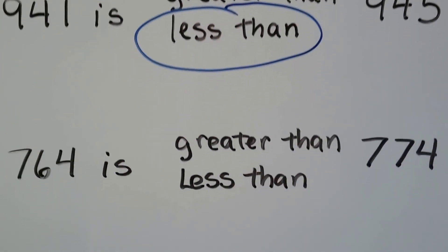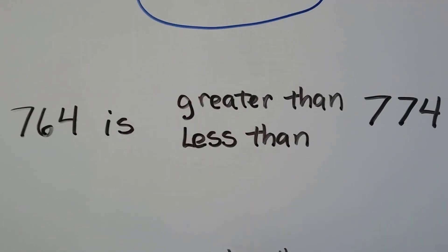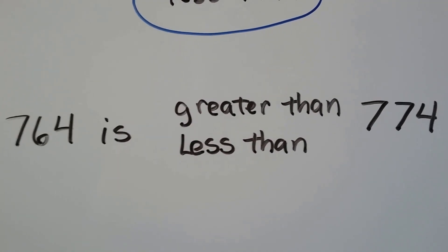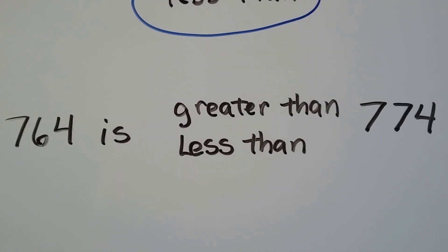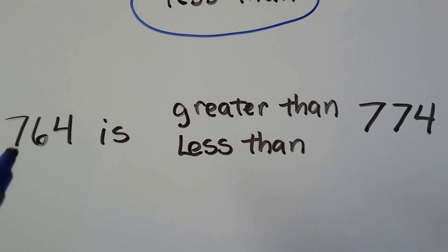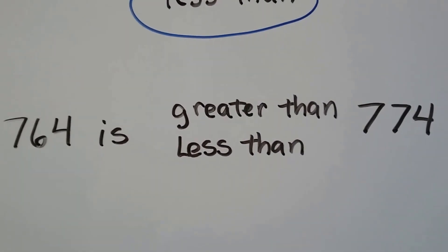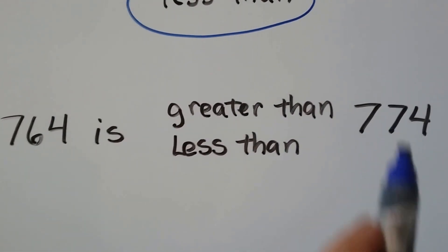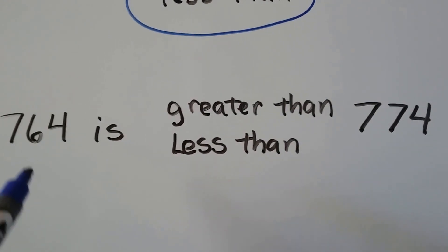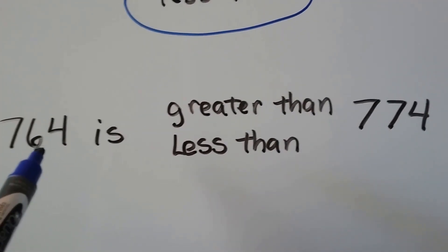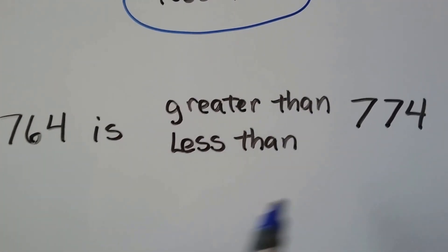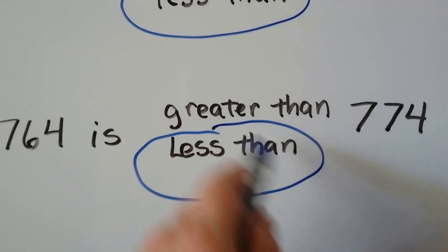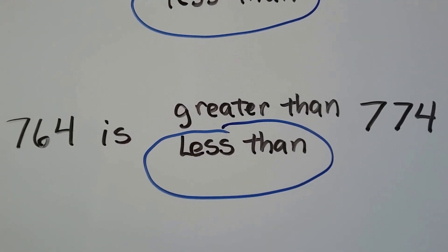Let's try this one. 764 is greater than or less than 774. They both have seven in the hundreds place, so we go to the tens place. This has a six, that has a seven. 764 has fewer tens, so 764 is less than 774.